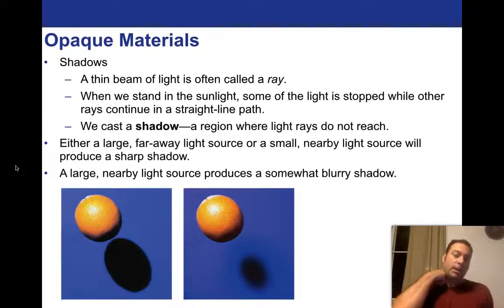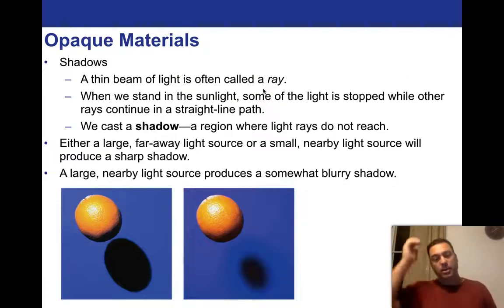Alright, so let's do a little bit about shadows. So in order to understand what shadow is, we have to define something called a ray. So a thin beam of light is often called a ray. So imagine a perfectly where all the light waves are all coming through and everything is perfectly perpendicular, like a laser beam. And that's called a ray. And when we stand in the sunlight, some of the light is stopped while other rays continue in a straight line path. In other words, it continues past you. And we cast a shadow. It's a region where light rays do not reach.